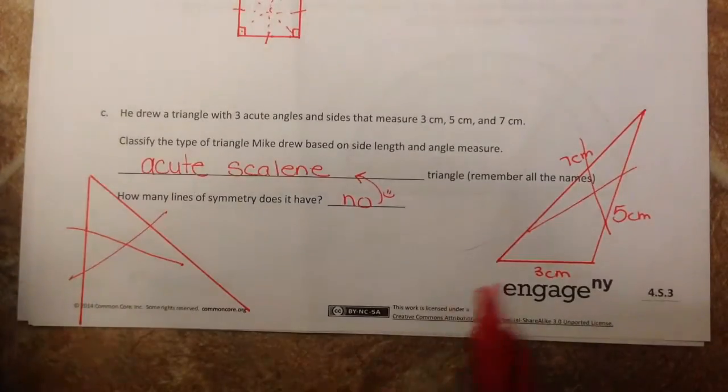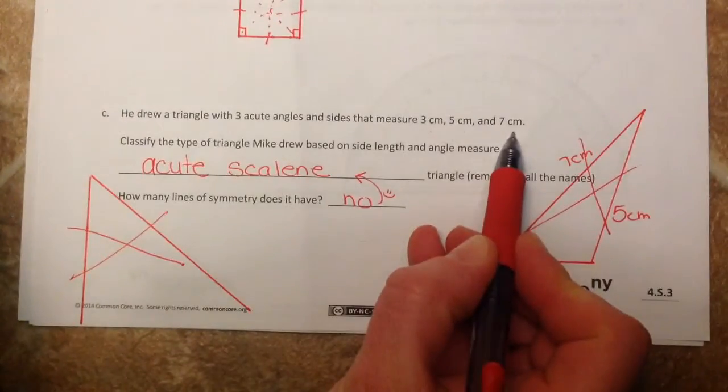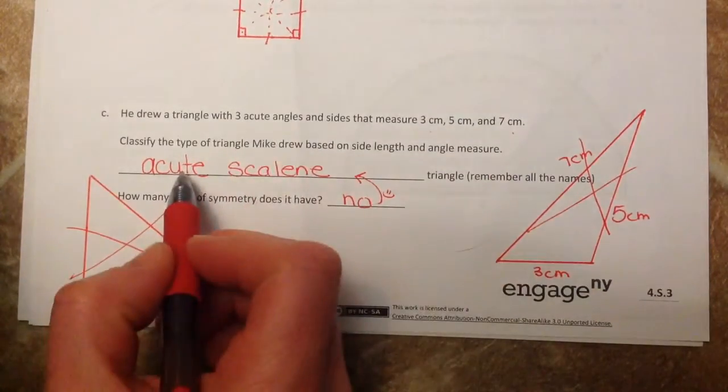So I decided that I just knew, because my sides were not equal, that it was obviously scalene, and then I had three acute angles. It was obviously acute.